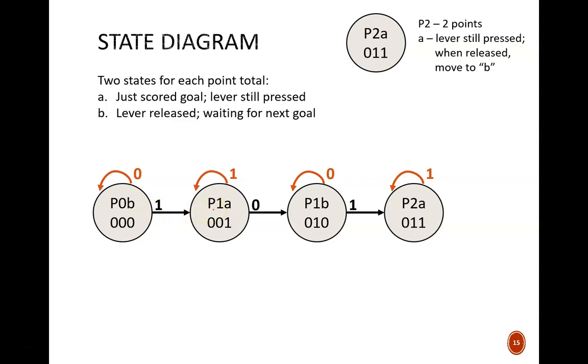This state is called P1A. It tells us that one point has been scored, and the lever is still being pressed. As long as the lever is still pressed, indicated by the one, the circuit remains in this intermediate state. But once the lever is released, indicated by the zero, the circuit moves to state P1B.